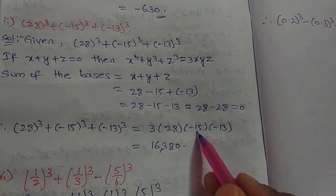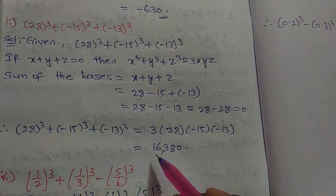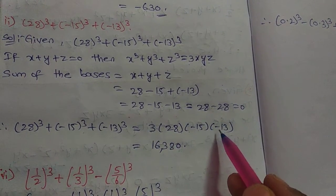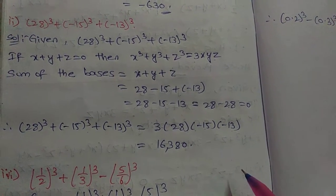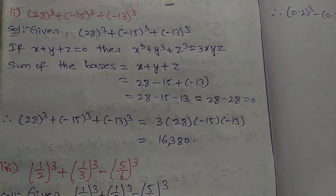So 3 × 28 × (-15) × (-13). Minus times minus gives plus. Multiplying this, we get 16,380.